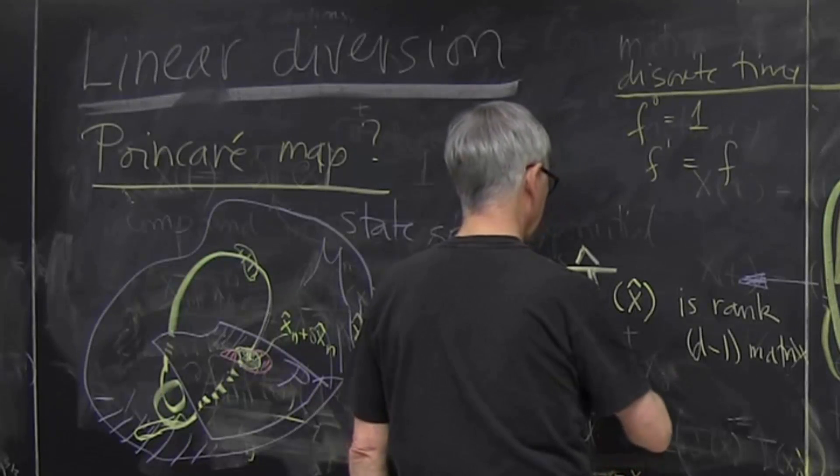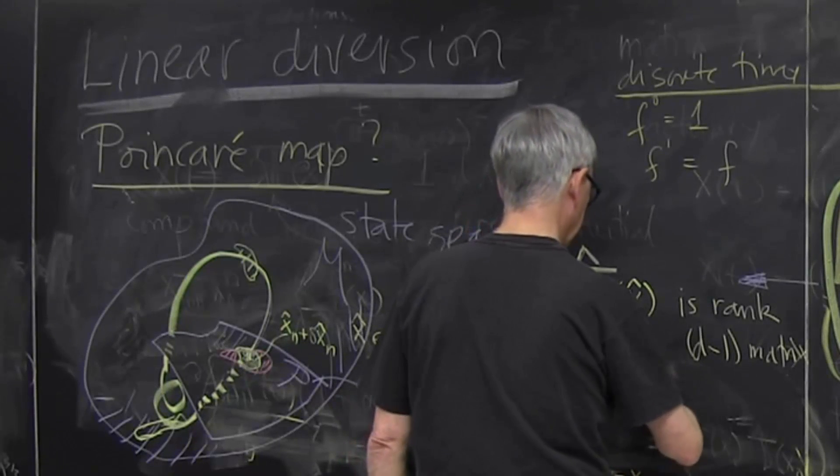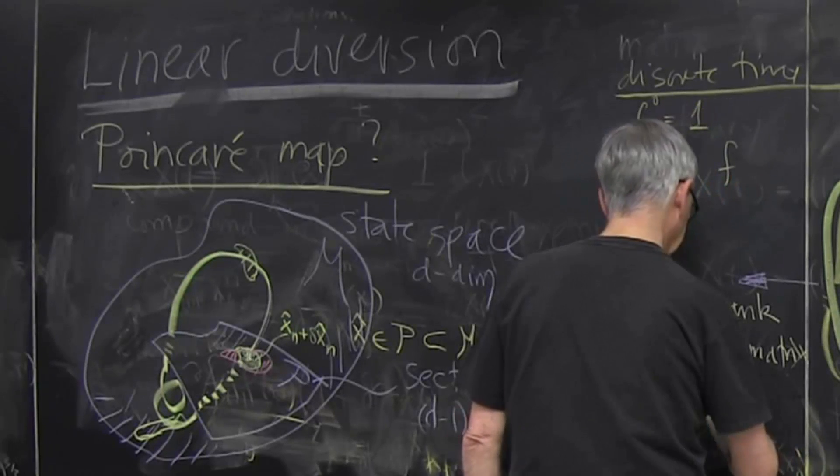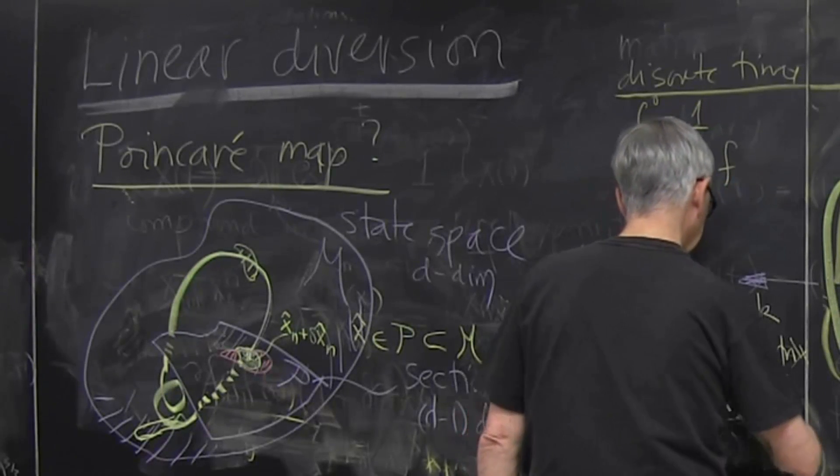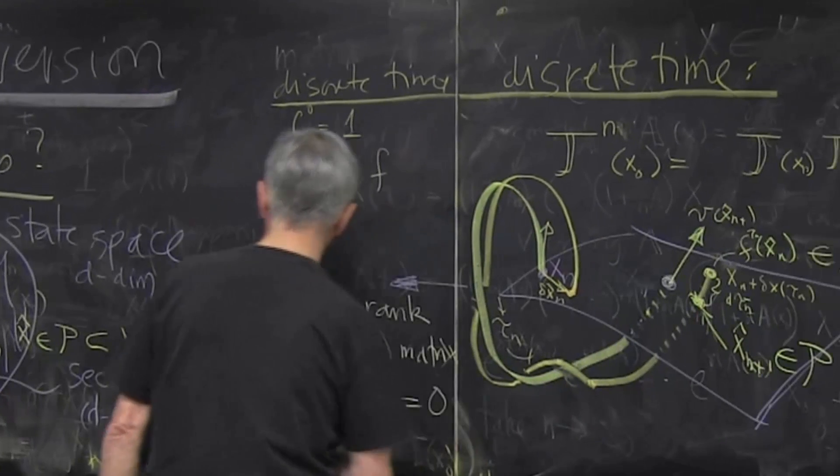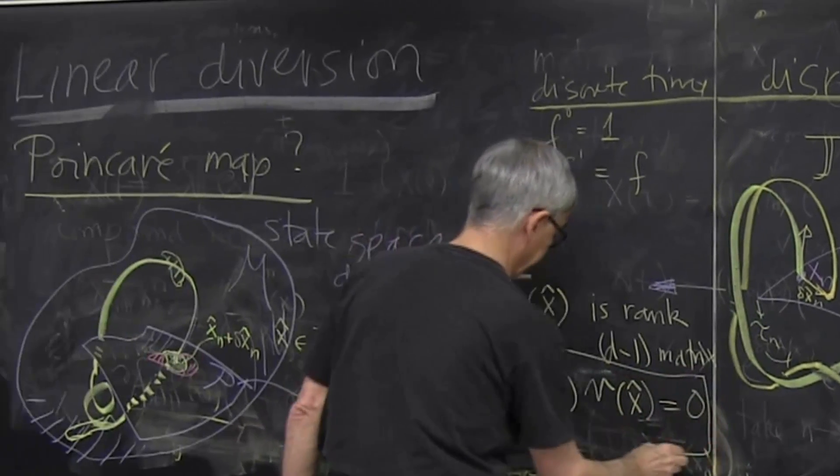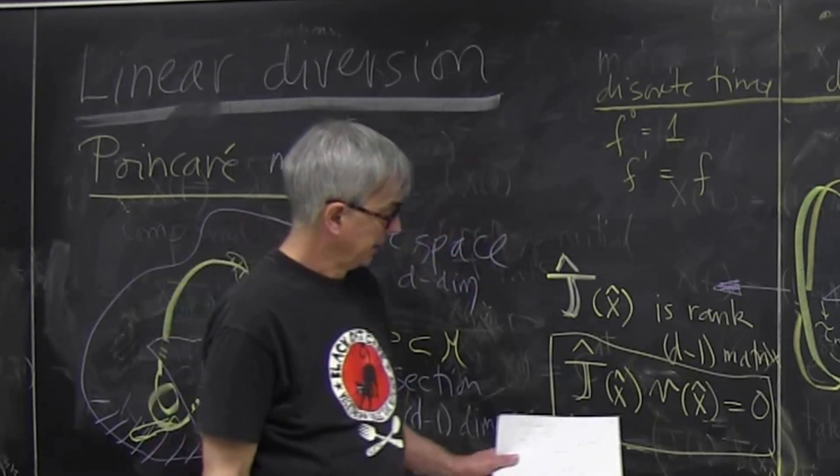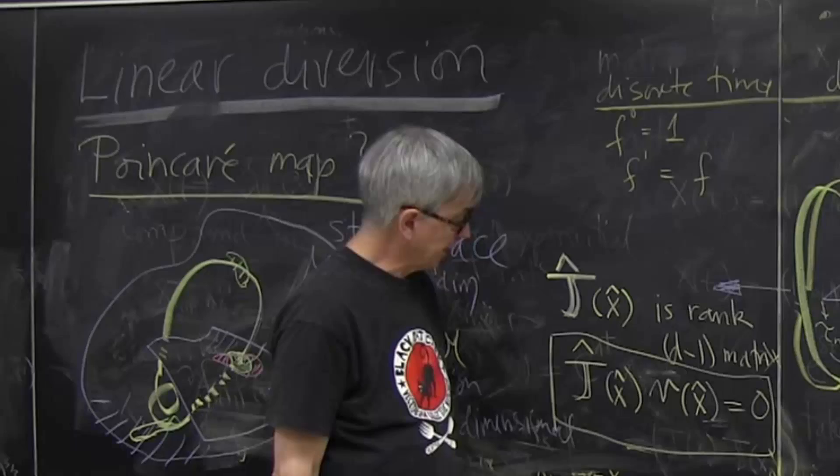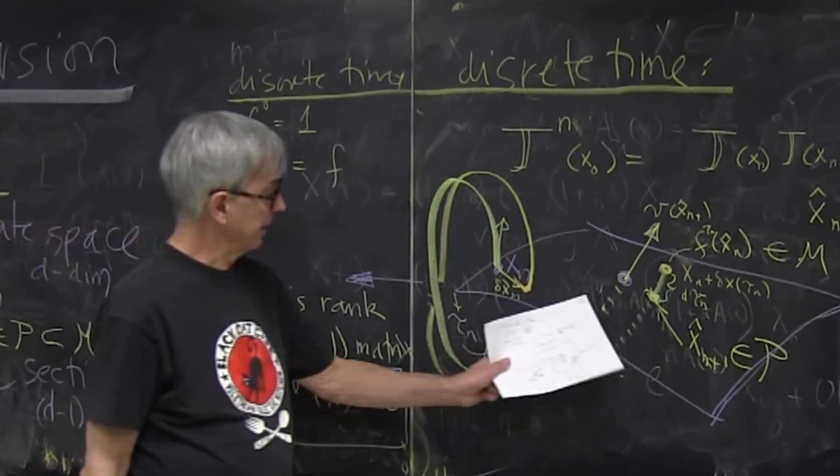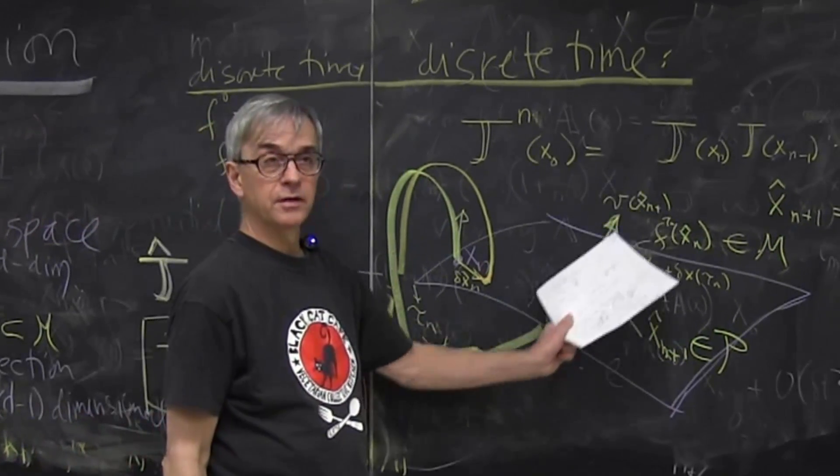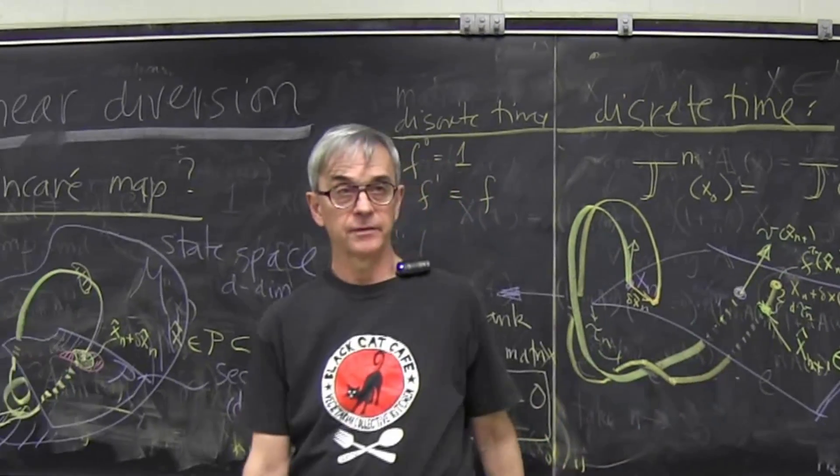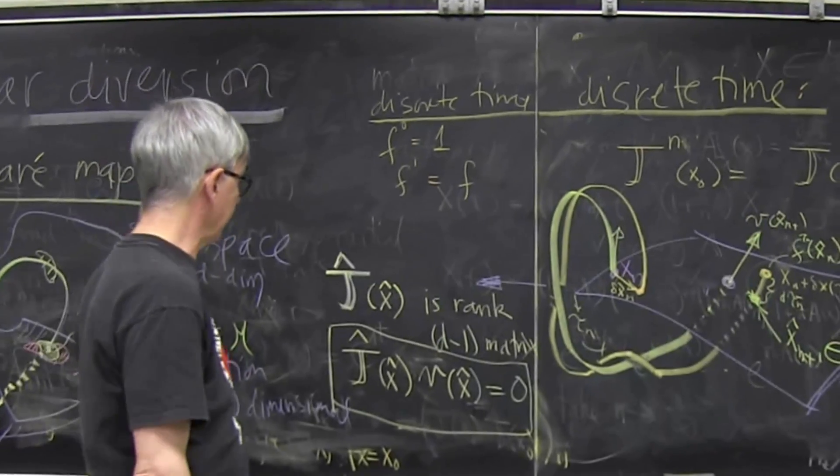And more specifically, you find that j of x prime times this vector here, evaluated at this point, that's zero. So one of the eigenvalues of d plus a full matrix is zero. And that means, you're not allowed to perturb along the trajectory. Nothing is gained. You're only allowed to perturb transversely to it. That's what it means. That's the idea of Poincaré section.